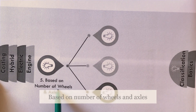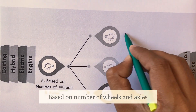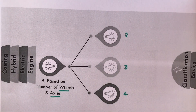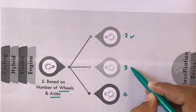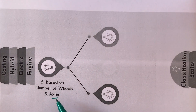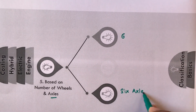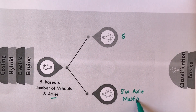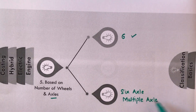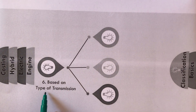The next basis of classification is based on the number of wheels and axles. Depending upon the number of wheels, vehicles may be classified as two-wheelers, three-wheelers, or four-wheelers. Similarly, based on the number of wheels and axles, vehicles can also be classified as six-wheelers or multi-axle vehicles.